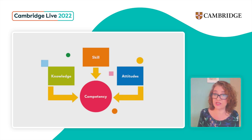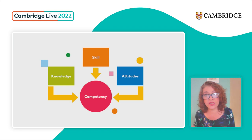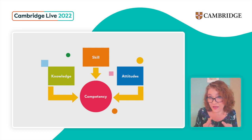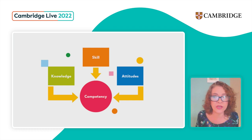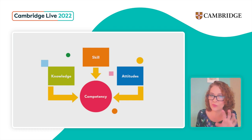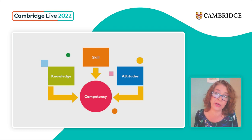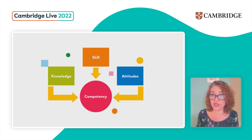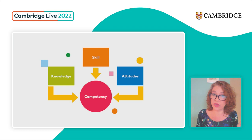First of all, we need to think about what we mean by life competency. We've talked about 21st century skills and life skills, so why is Cambridge using the term 'competency'? This is explained in more detail in each of those booklets and in our introductory booklet. In a nutshell, a competency is more than just a skill — it's the combination of knowledge, skill, and attitude.